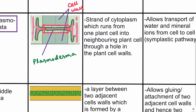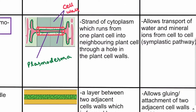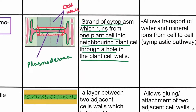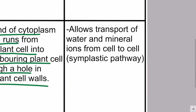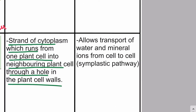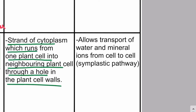Plasmodesmata are the strands of cytoplasm which run from one plant cell into the neighboring plant cell through a hole in the plant cell walls.